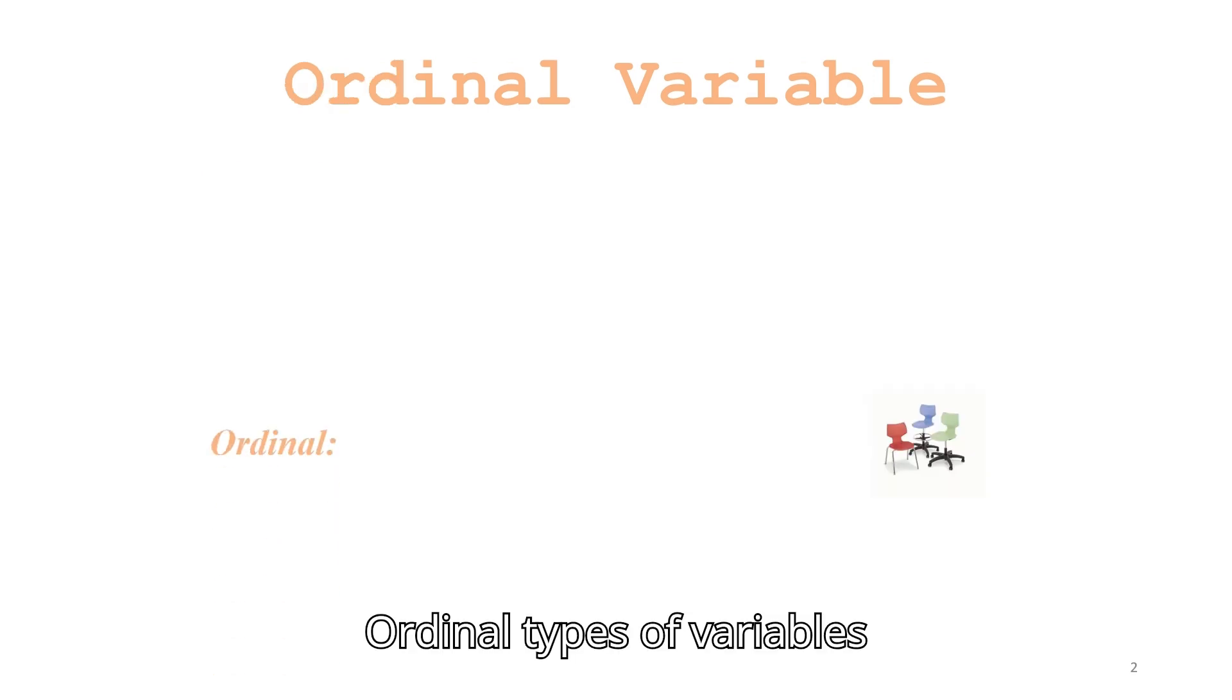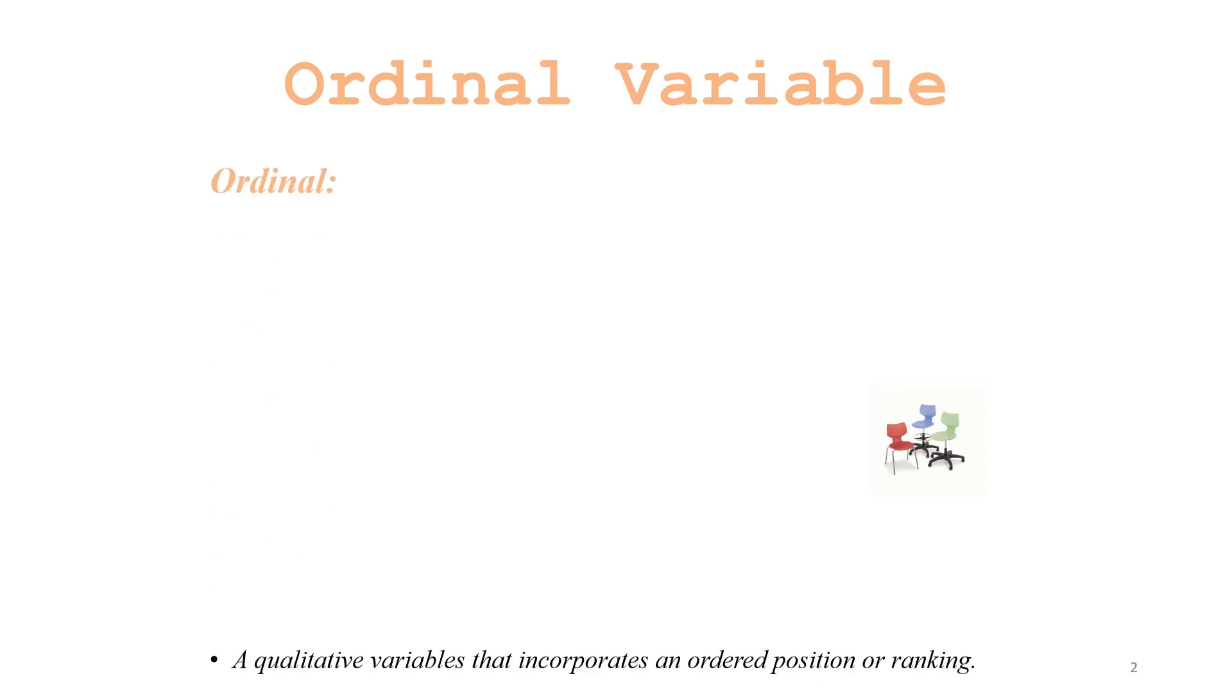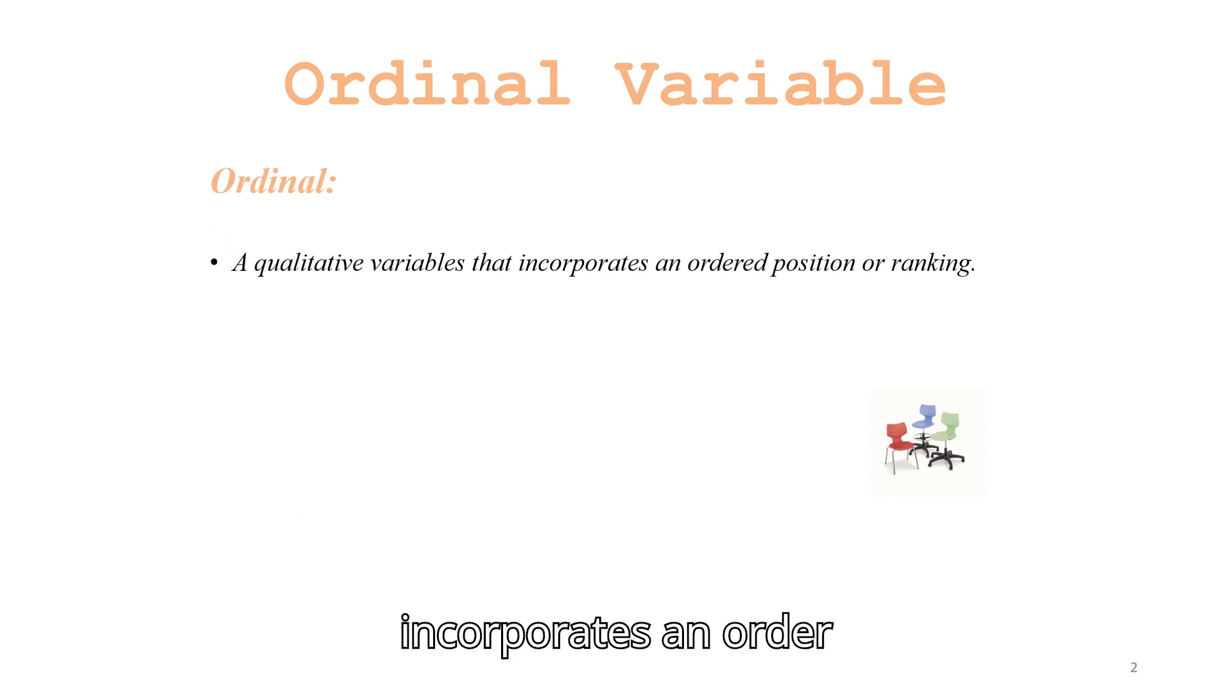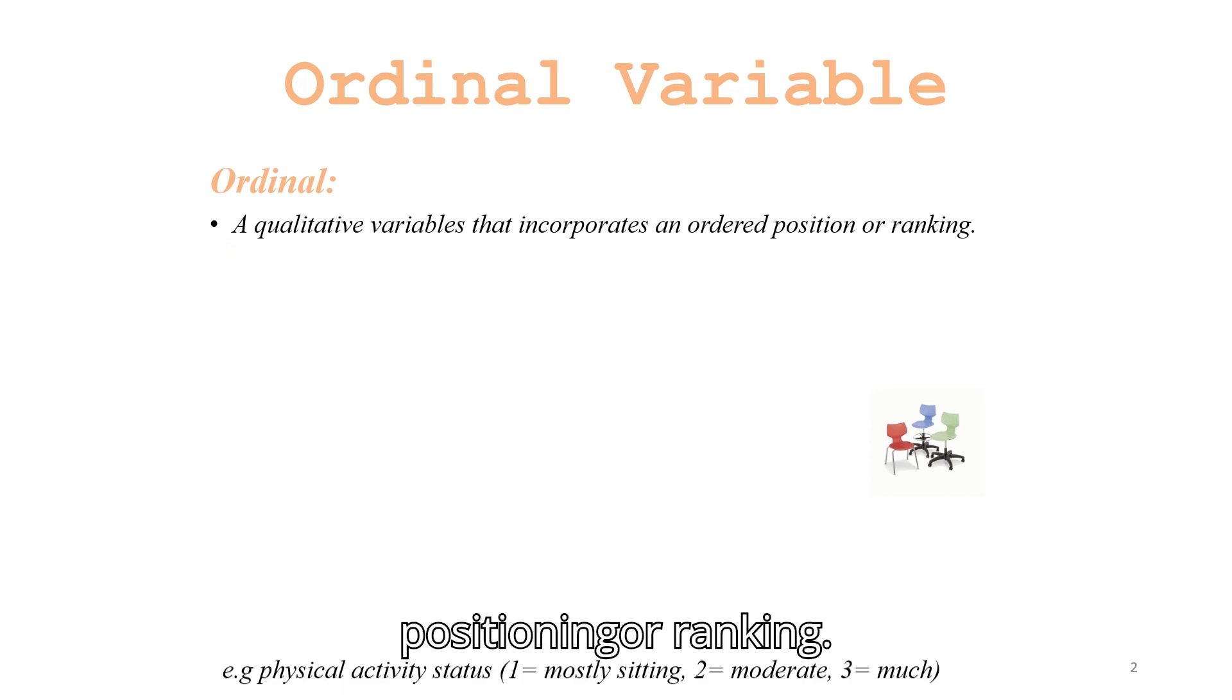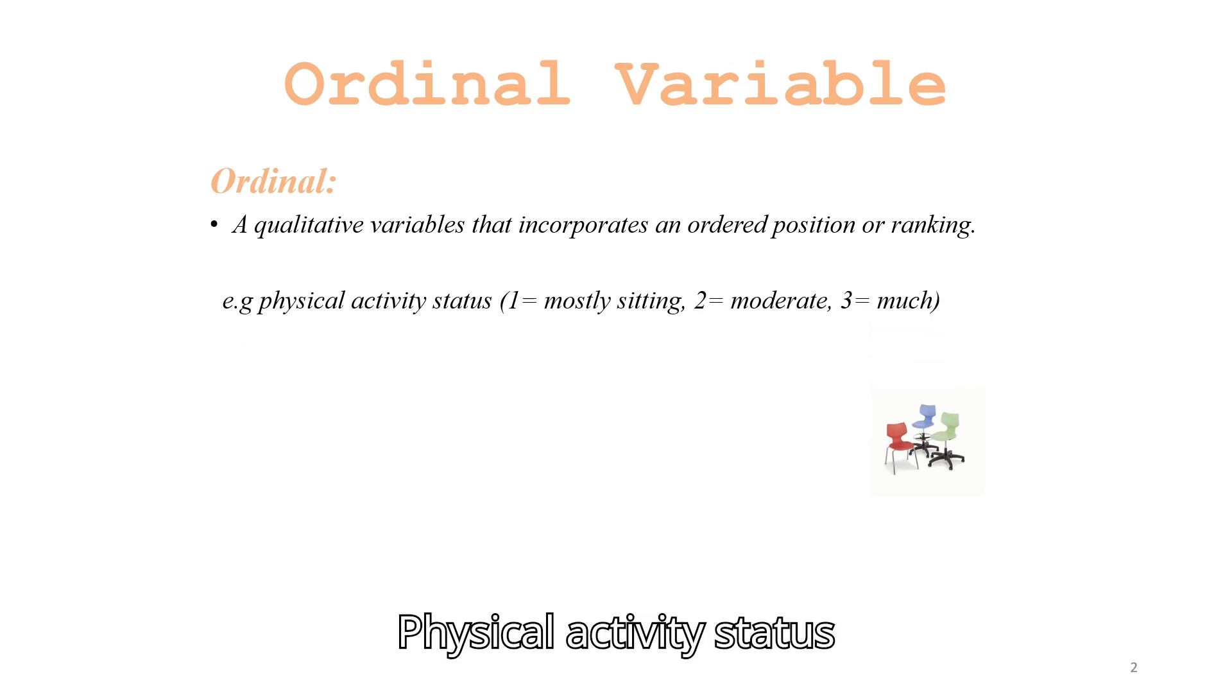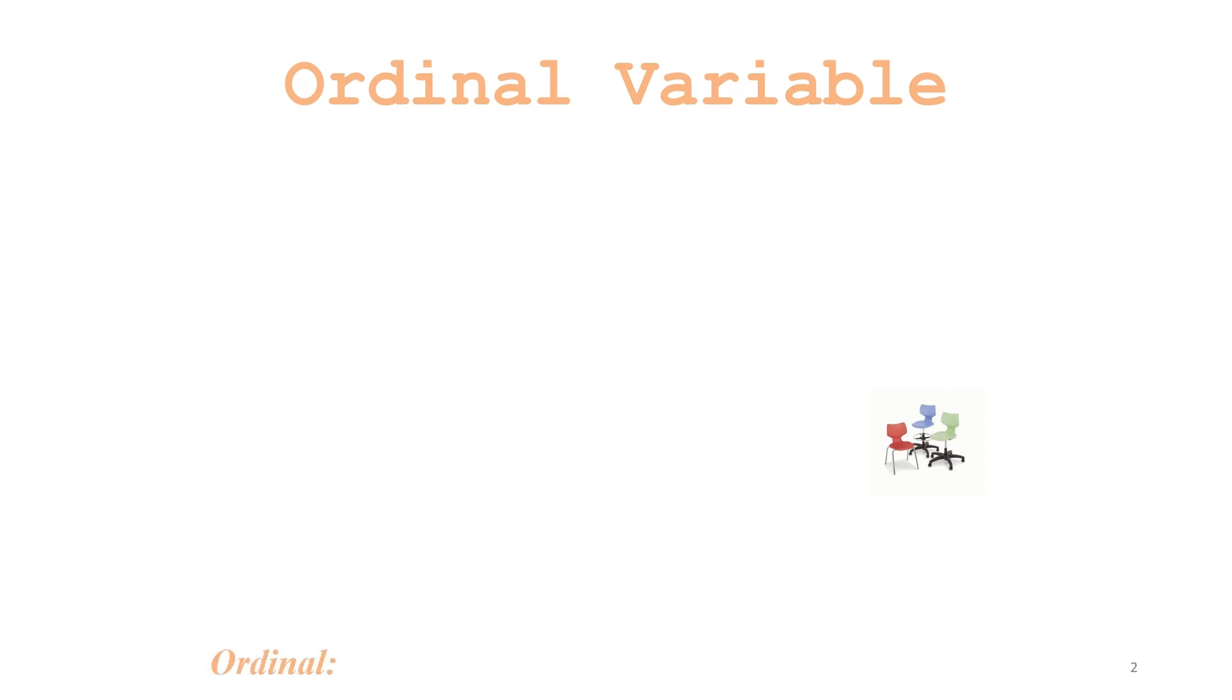Ordinal variables are a qualitative variable that incorporates an order, positioning, or ranking. For example, physical activity status: closely sitting, moderately sitting, and much sitting.